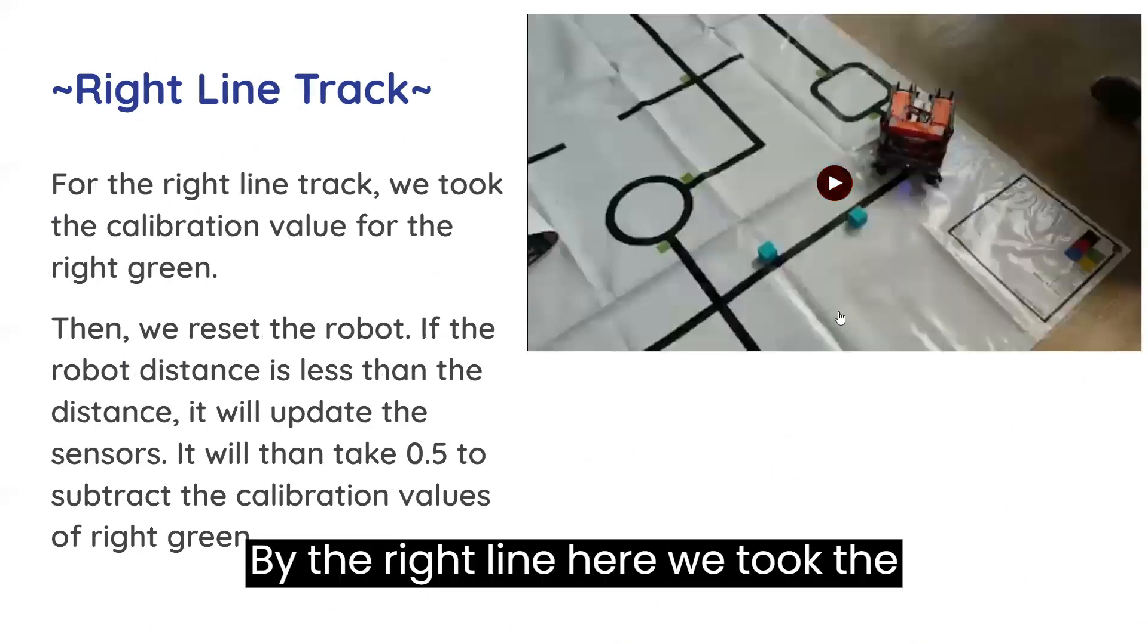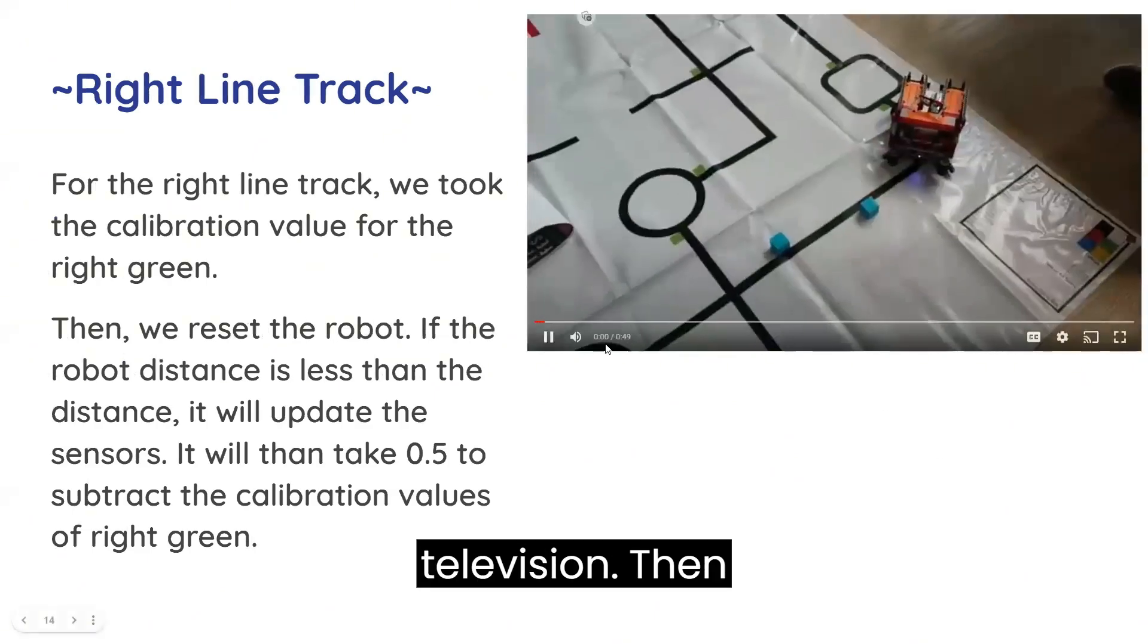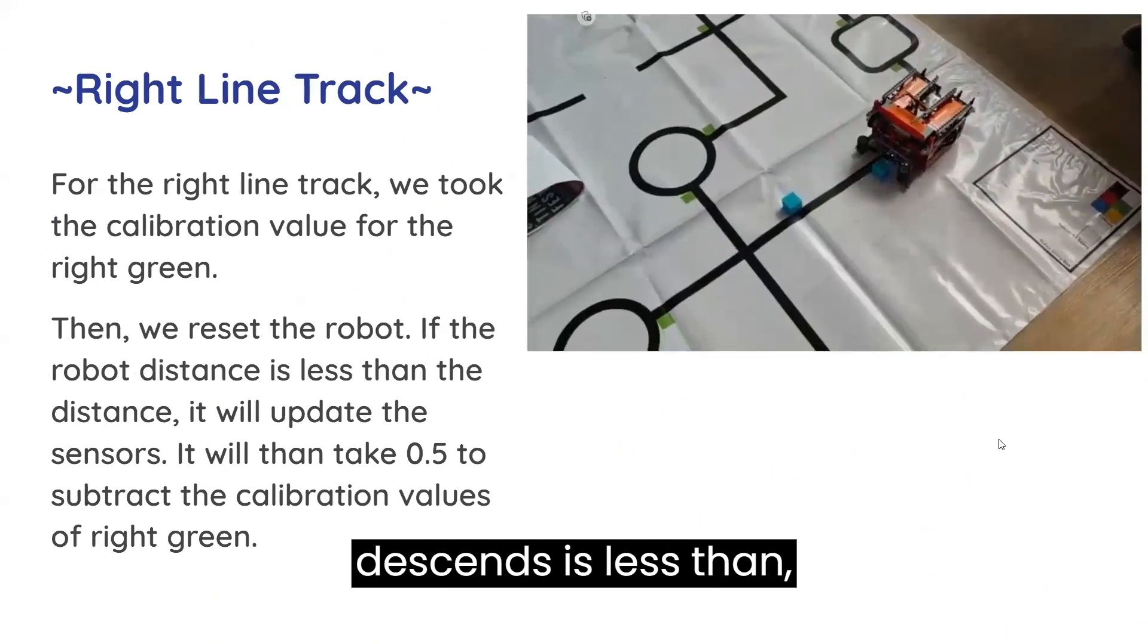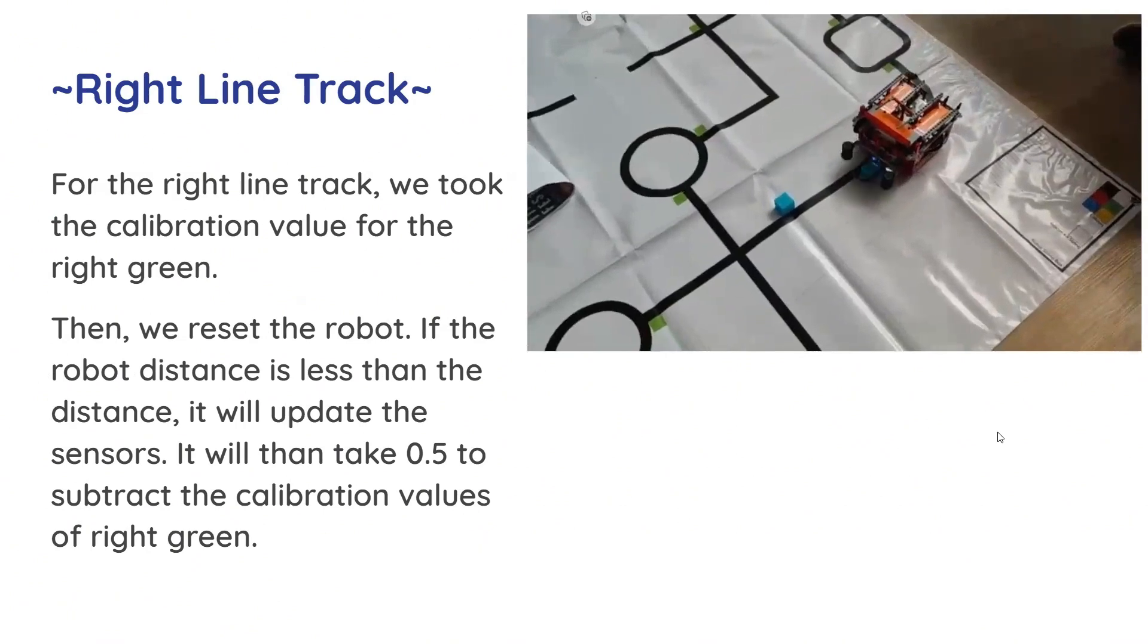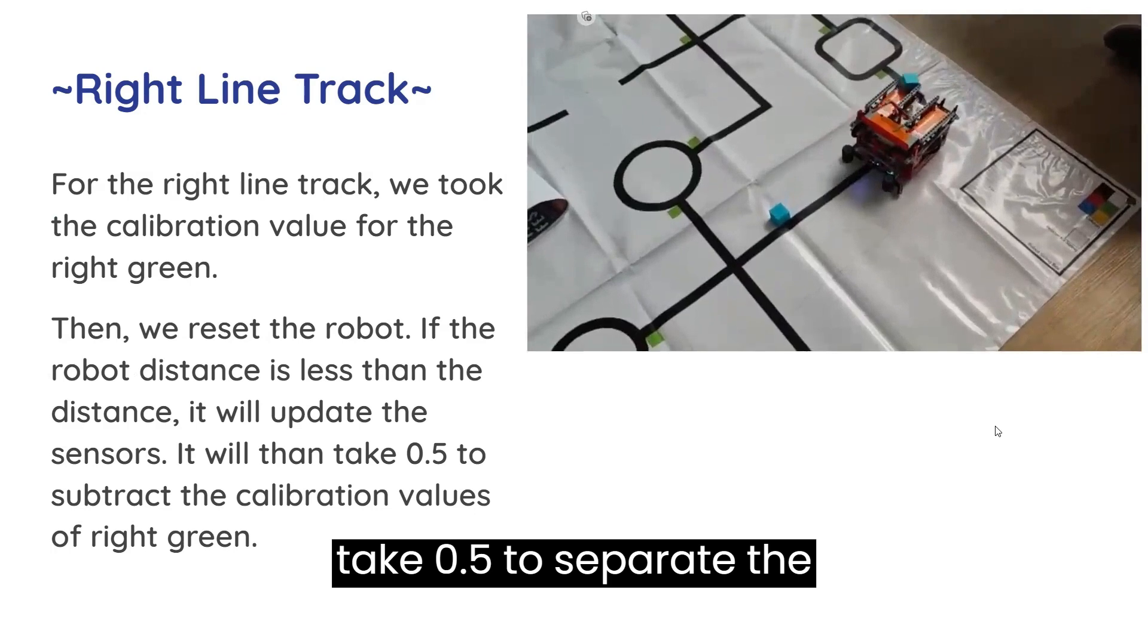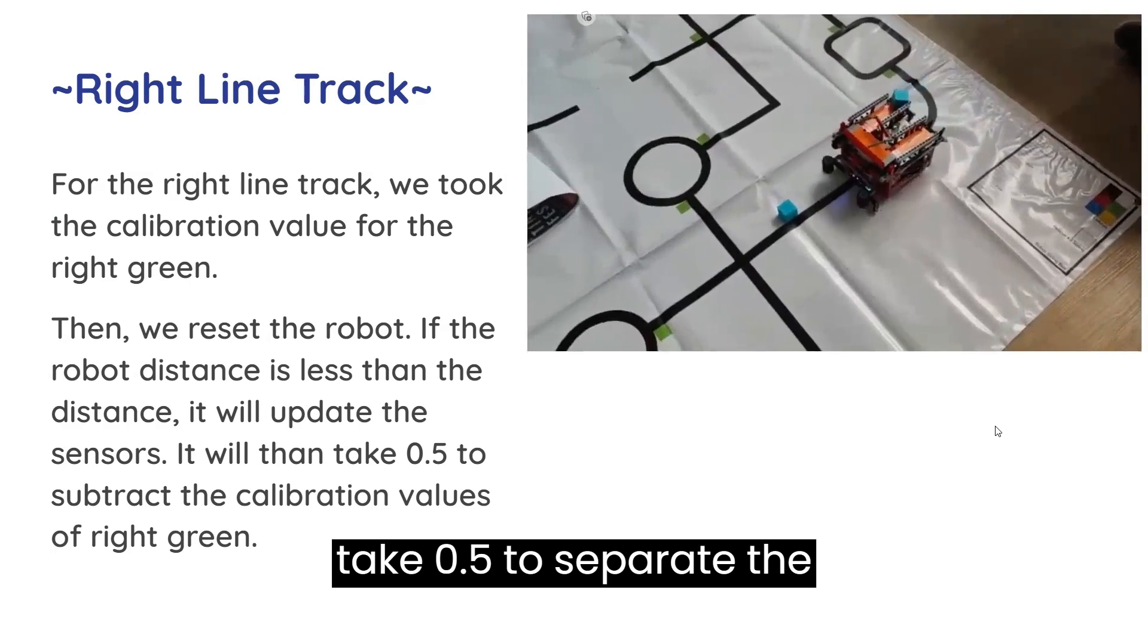For the right line thread, we get the calibration values. Then we reset the robot. If the robot distance is less than the threshold distance, it will update the sensor. It will then take 0.5 to subtract the calibration values.